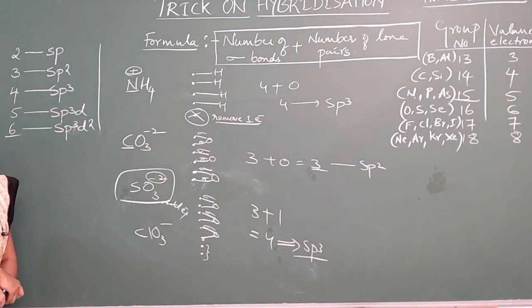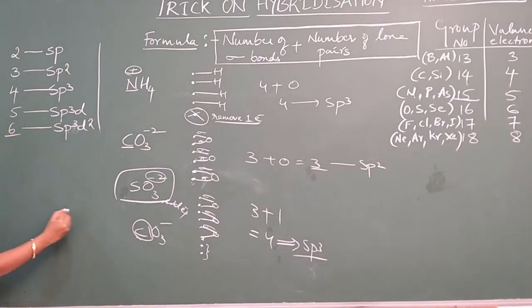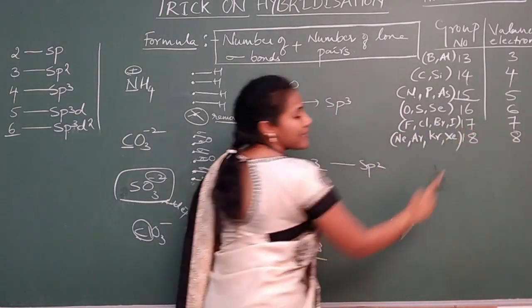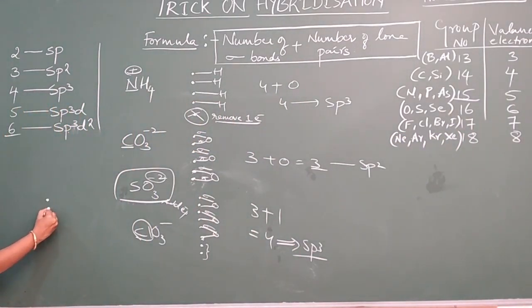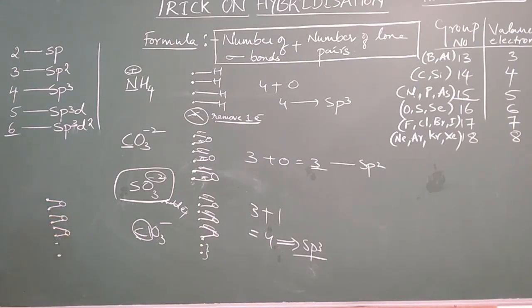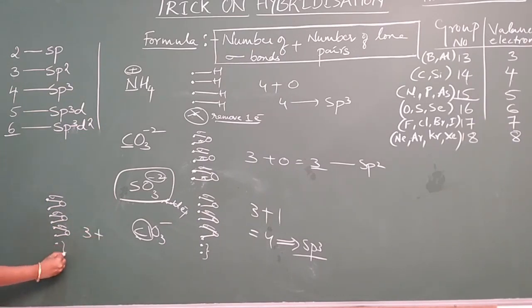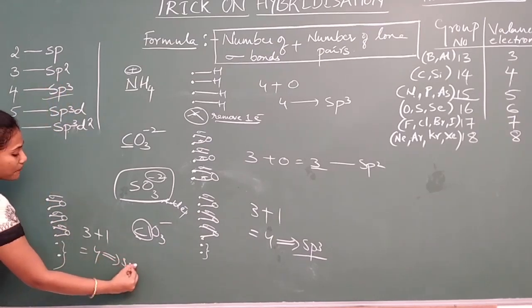For ClO3⁻, chlorine is the central atom, belonging to group 17 with 7 valence electrons. Put 7 dots. Minus 1 means add 1 electron, giving 8 total. The 3 oxygens each take 2 electrons (1 sigma, 1 pi). Applying the formula: 3 sigma bonds plus 1 lone pair = 4. A digit of 4 means SP3 hybridization.